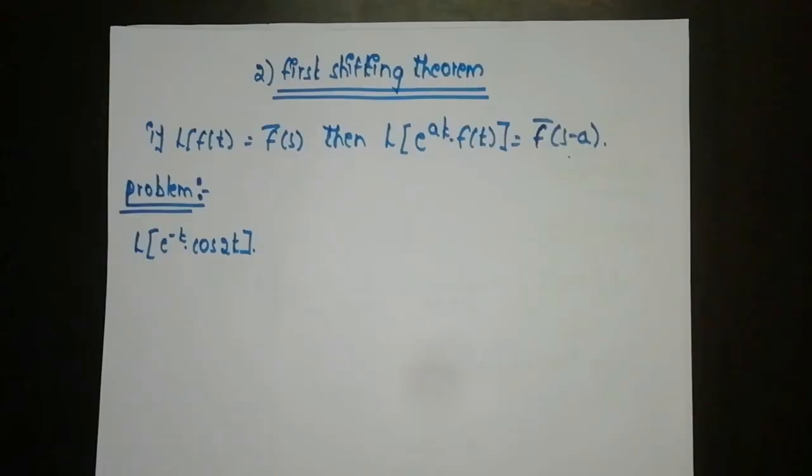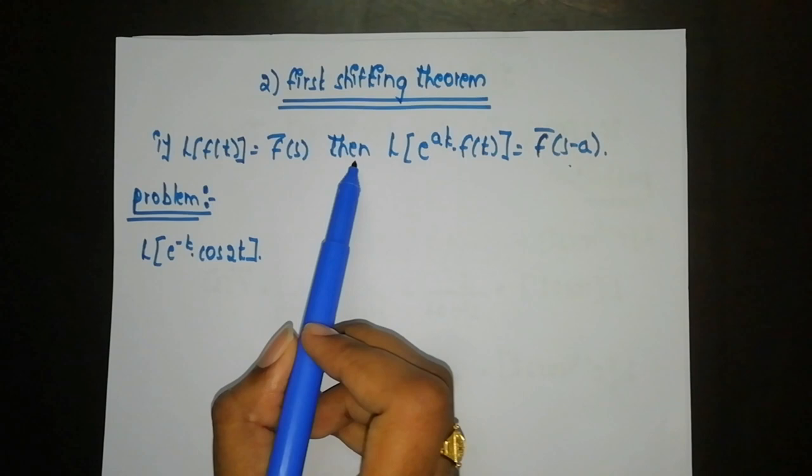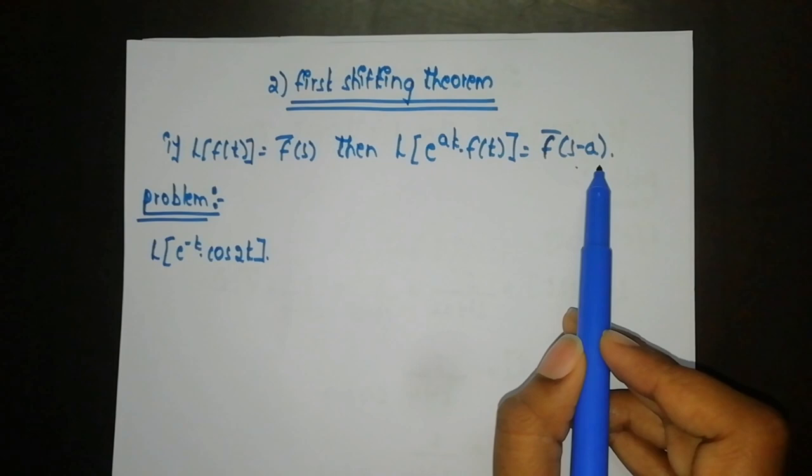Coming to the second model of Laplace transform, that is the first shifting theorem. The formula is: if L{f(t)} = F̄(s), then L{e^(at)·f(t)} = F̄(s−a). When an e^(at) term multiplies a function, replace s with s−a in F̄(s). Let us do a problem on this.